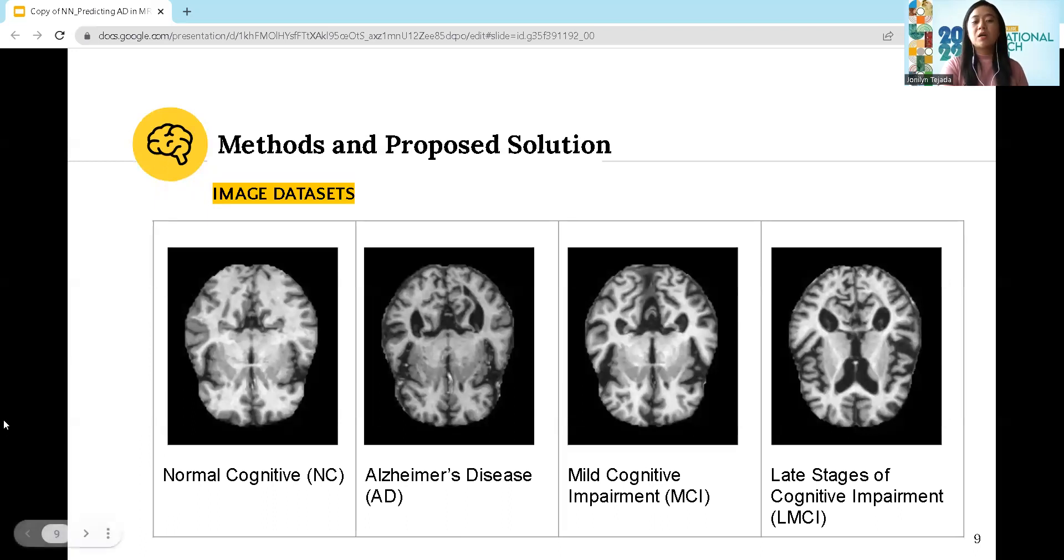These are the sample image datasets used in the study. From the left side of the screen, we have normal cognitive samples, Alzheimer's disease (AD), mild cognitive impairment (MCI), and LMCI.